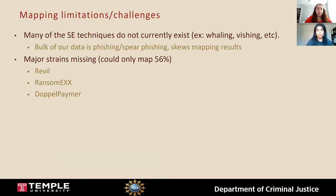We did experience some challenges and found some limitations with mapping our data sets onto the ATT&CK framework. In the social engineering data set, many of the social engineering tactics do not currently exist in the framework, such as whaling and vishing. While our mapping results showed about half of the tactics mapped over, the bulk of our incidents are phishing and spear phishing attacks, which the framework does include, which raised that percentage for us. We had very few techniques besides phishing that mapped onto the framework. In the ransomware data set, we were unable to map a portion of the strains — some strains that appear frequently, such as REvil, do not yet exist in the framework, and other newer strains such as RansomX are also not yet in the framework.